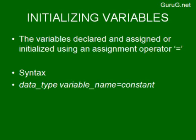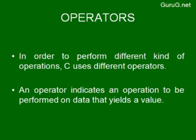Initializing a variable means variable declaration combined with an assignment operator. The syntax is: data type, followed by the variable name, followed by the assignment operator '=', followed by a constant value. Each variable declaration or initialization statement should be terminated with a semicolon.